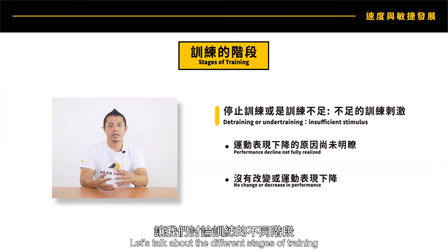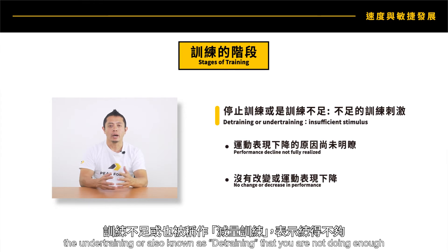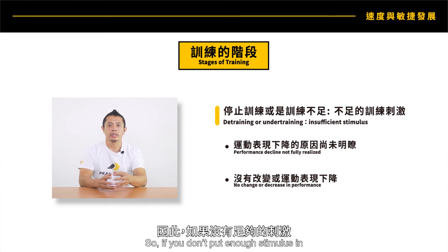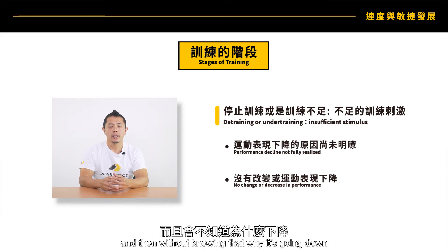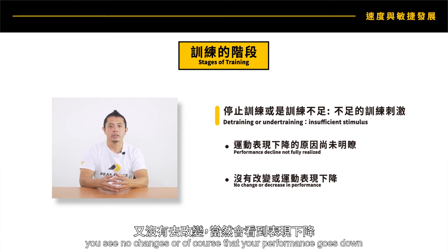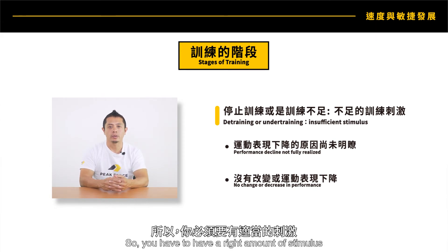Let's talk about the different stages of training. Under-training, also known as de-training, means you're not doing enough — it's an insufficient stimulus. If you don't put in enough stimulus, you usually see performance going down. With under-training you see no changes, or your performance goes down. You have to have the right amount of stimulus.